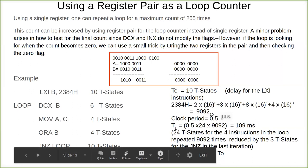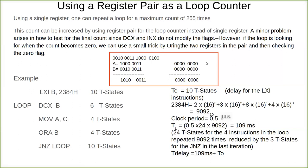Which is nothing but roughly 109 milliseconds. So 24 T-states for the 4 instructions in the loop is repeated 9092 times and reduced by the 3 T-states for the jump on zero in the last iteration. So total time delay is 109 milliseconds plus the outside the loop time delay.